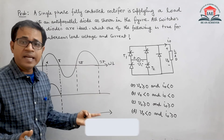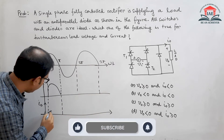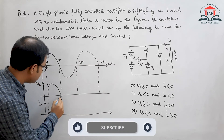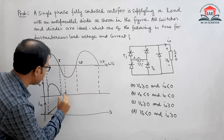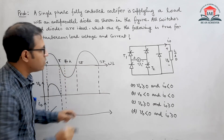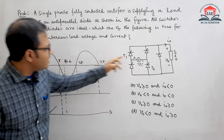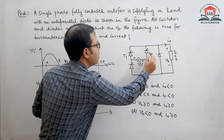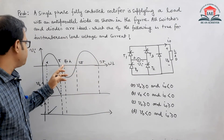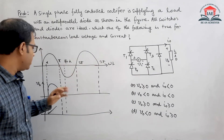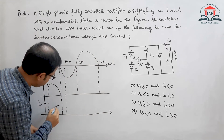Let us assume the load is inductive type. The current will start from alpha. We can assume that before the next triggering at pi plus alpha — to keep symmetry, if T1 and T2 are triggered at alpha, then T3 and T4 must be triggered at pi plus alpha. So the current waveform will be something like that, and we assume current did not come to zero.